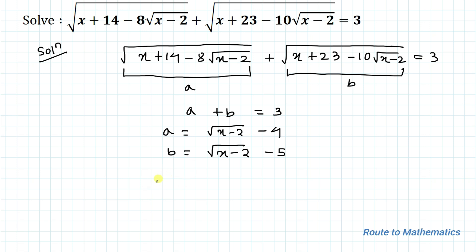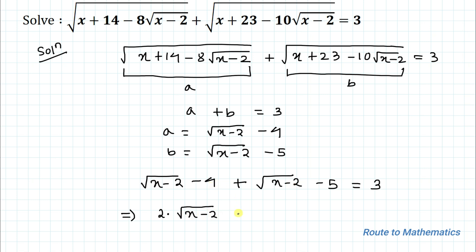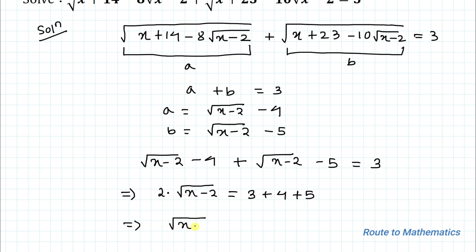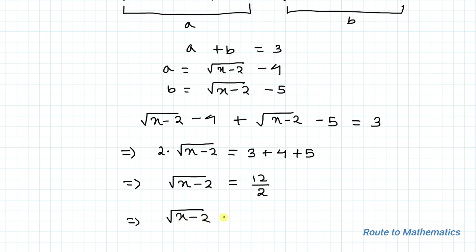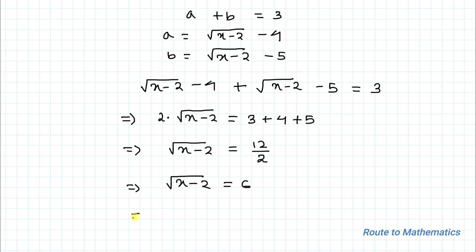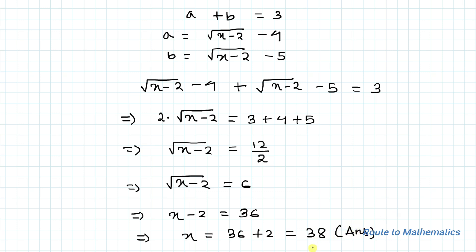Now let's substitute the values into a + b = 3. We have (√(x-2) - 4) + (√(x-2) - 5) = 3, which gives 2√(x-2) = 3 + 4 + 5 = 12, so √(x-2) = 6. Squaring both sides: x - 2 = 36, therefore x = 36 + 2 = 38. Our answer is x = 38.